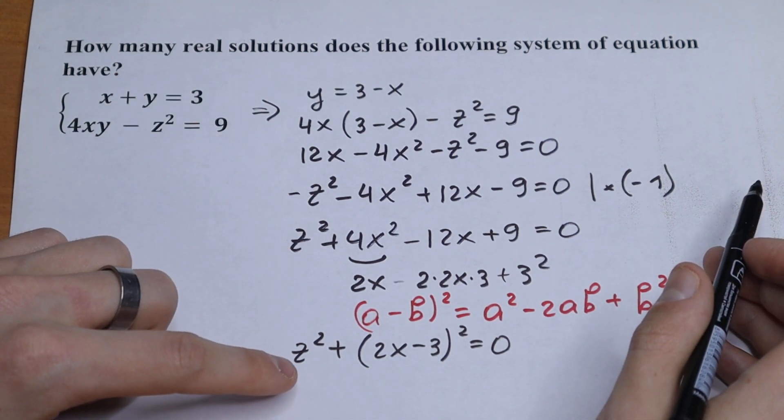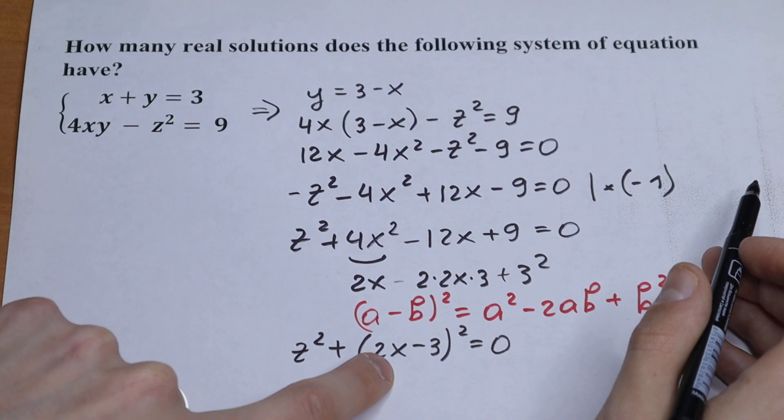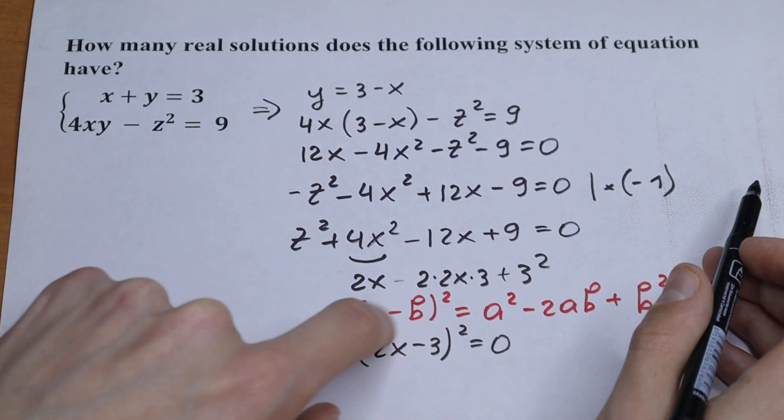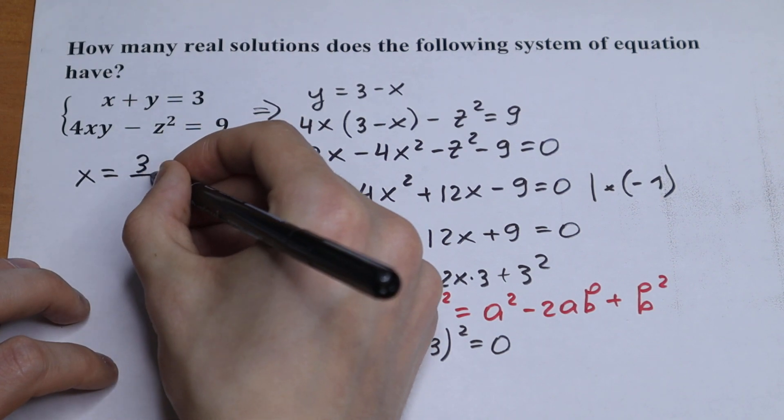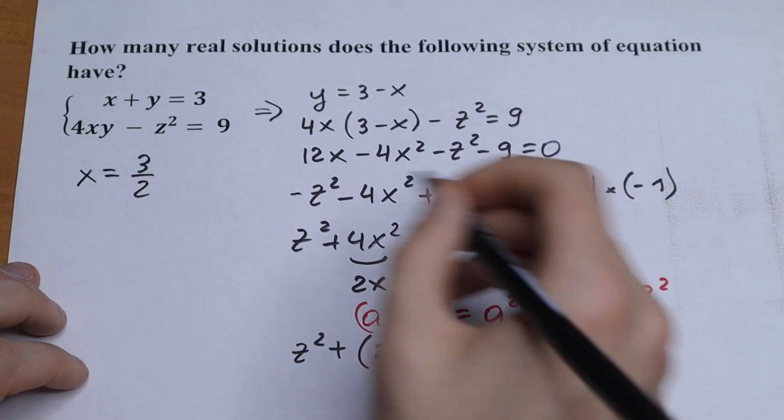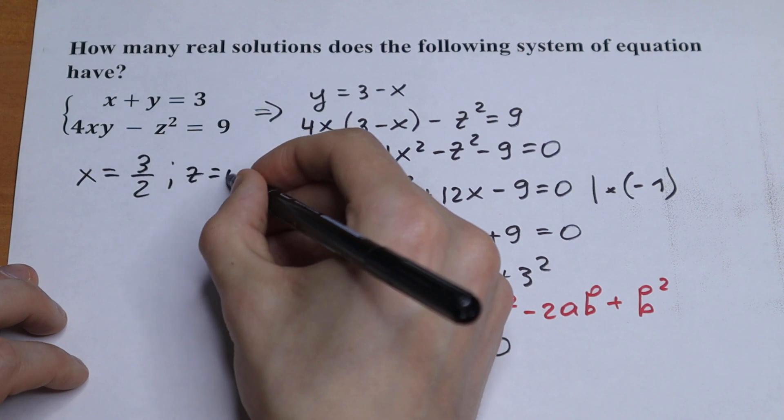The only solution for the above equation is x equal to 3 over 2. Right here then we will have 0. So x equal to 3 half and z equal to 0.